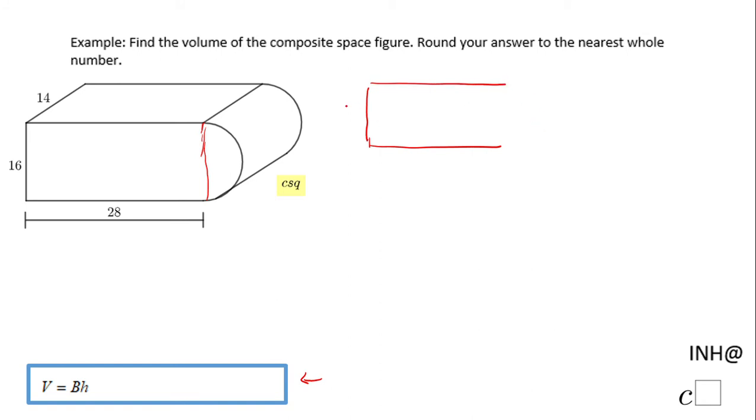So this is this rectangle, this is 16, this is 28, and we have a half of a circle. So this is kind of what we call a cross section of this composite space figure.